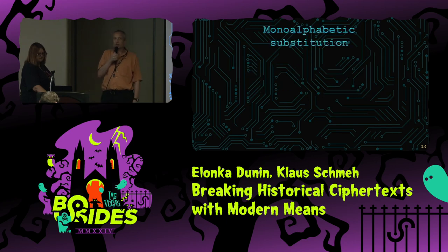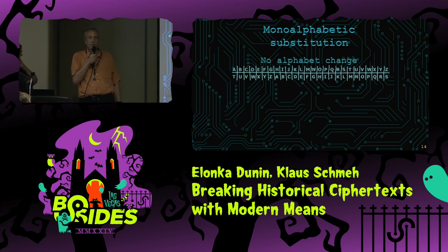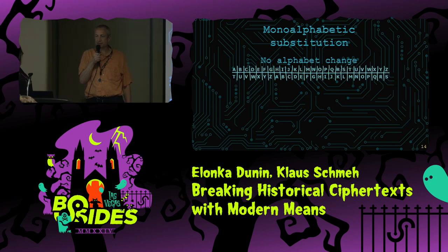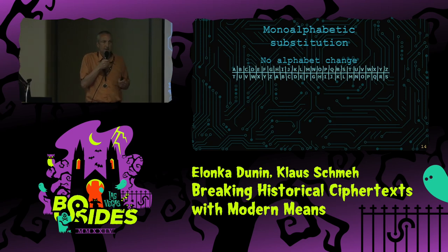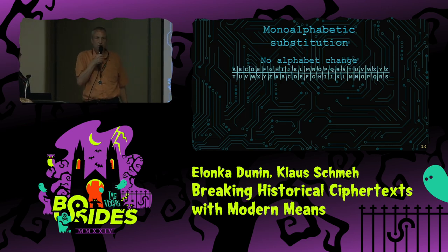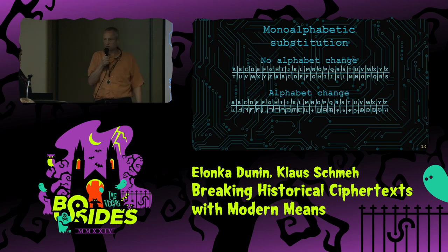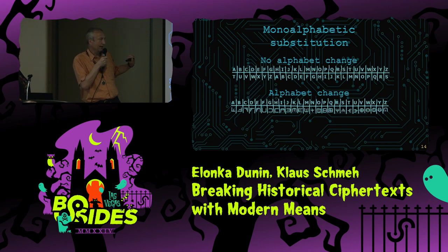When talking about cryptanalysis of old ciphers, let's start with the most simple case: the monoalphabetic substitution cipher. Monoalphabetic substitution simply means that you replace every letter of the alphabet with something else. We have a substitution table, like you can see here. The simplest case is that every letter of the alphabet is replaced with another letter of the alphabet. There is also the slightly more complicated case when the alphabet changes — every letter is replaced with a symbol.